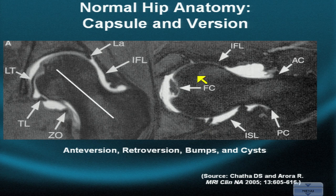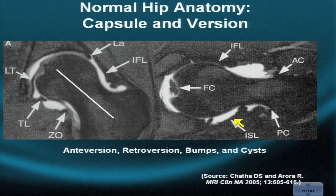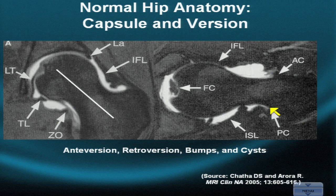The para axial is used to evaluate the shape of the femoral head and the tapering of the femoral neck. Lack of tapering may imply the diagnosis of cam-type impingement — this is where we look for bumps and cysts. The para axial also shows the iliofemoral ligament anteriorly, the ischiofemoral ligament posteriorly, the fovea capitis with fat, the ligamentum teres, and the anterior and posterior capsule.